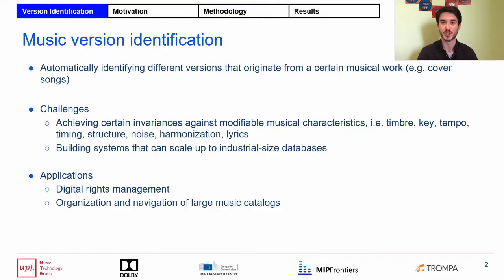What is music version identification? We can define this task as automatically identifying different versions that originate from a certain musical work. Another widely used term for versions is cover songs. It is a common practice to change some of the musical characteristics of a song while creating a new version — for example, artists may modify the root notes, the structure, or the tempo of a song while performing their own versions. Handling these changes is one of the big challenges of this task.